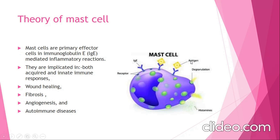When the antigen attaches with these immunoglobulins, at that time it causes activation of mast cells. At the same time, mast cells consist of a number of vacuoles in which histamine and other inflammatory mediators are enclosed. At the time of degranulation of mast cells, the histamine and inflammatory mediators are released.